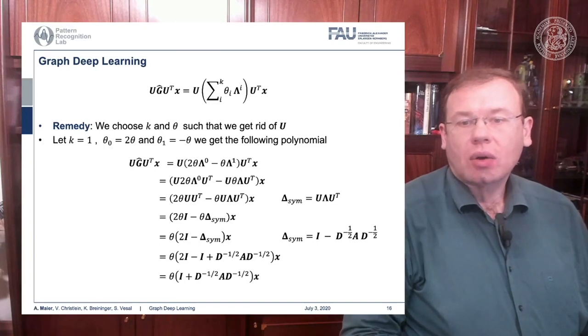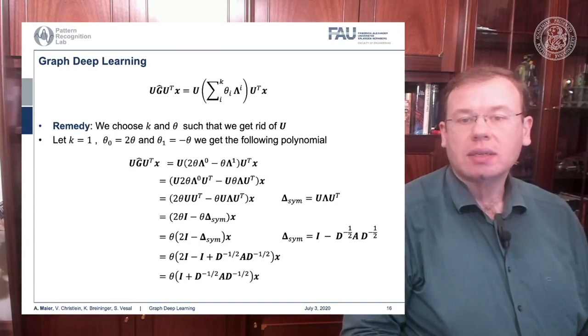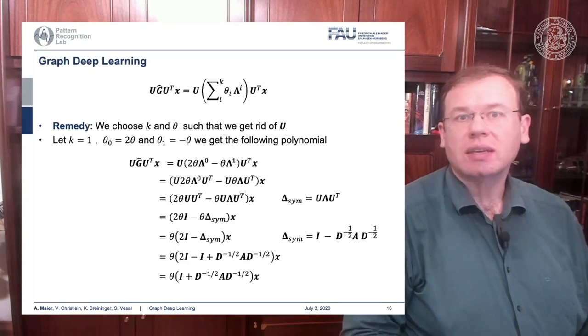This way we don't have U coming up at all, and we can express our entire graph convolution in this very nice way using the graph Laplacian matrix.